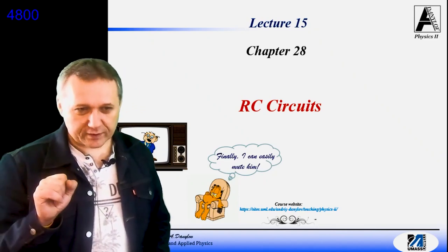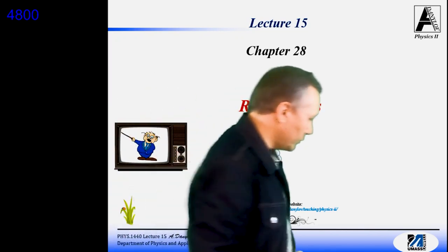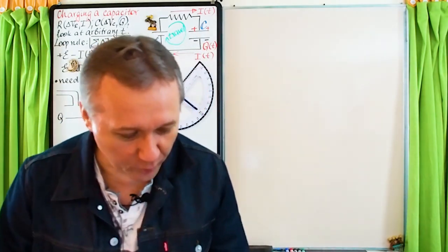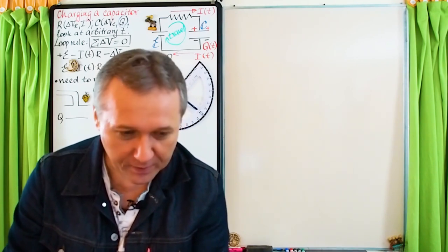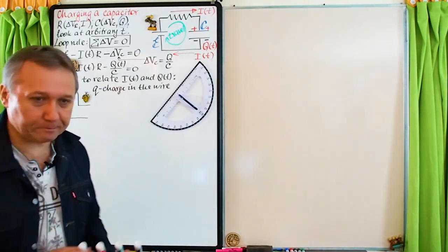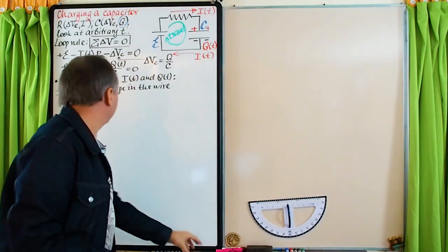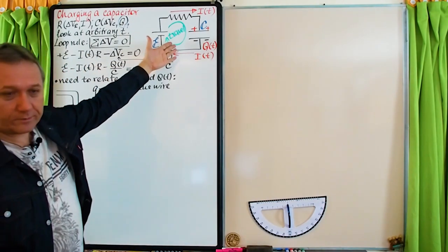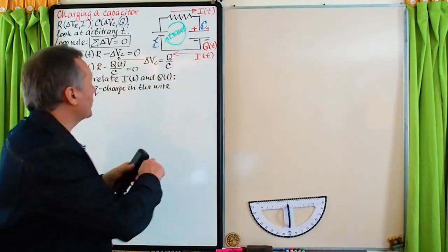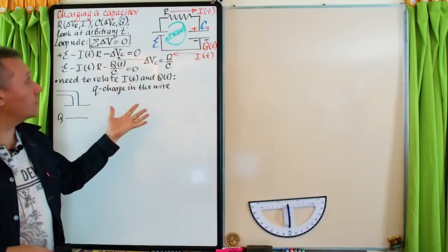Let's finish the charging case. I'll switch to the whiteboard. I reproduced what we had at the end of the previous class. Charging situation: ideal battery with EMF, then capacitor C and resistor R.